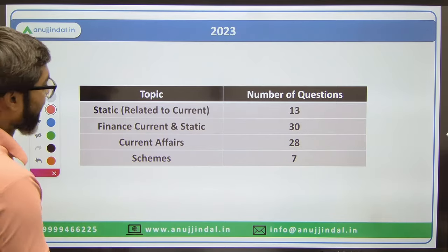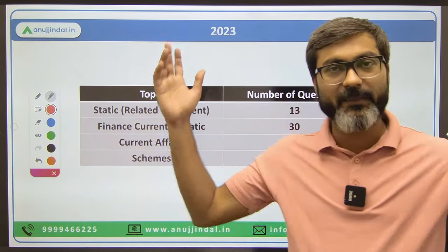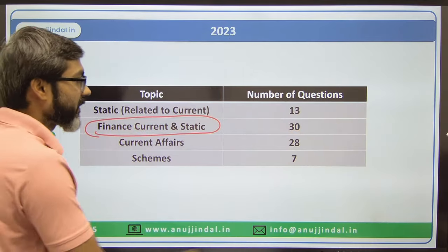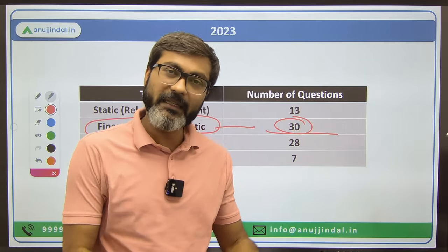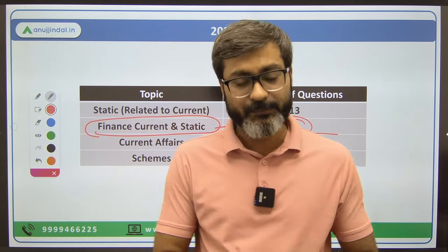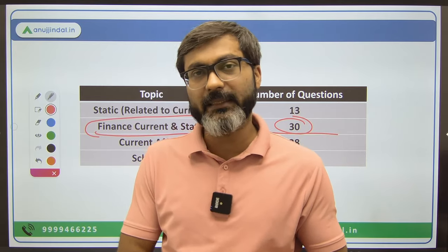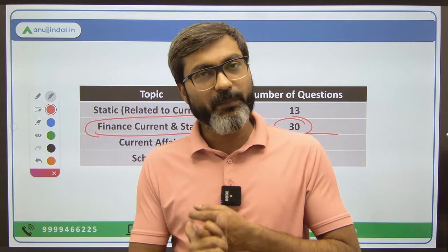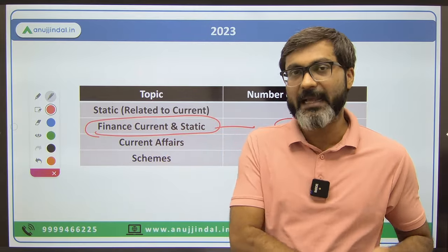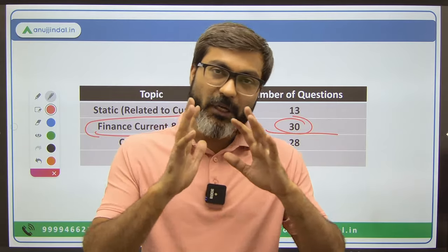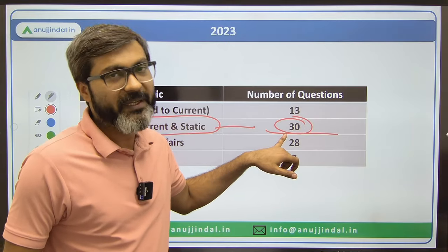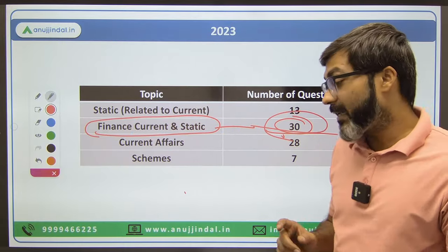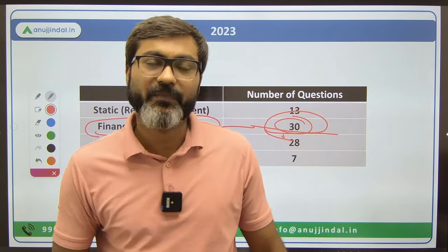In 2023, there was a very big surprise. 30 questions out of 80 were from finance current affairs and static combined. Finance current affairs included questions from RBI Annual Report, Monetary Policy recommendations, RBI website releases, and finance-related newspapers like Mint and Economic Times. The questions were very in-depth - not easy at all.